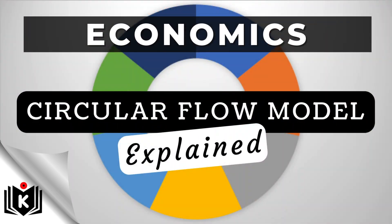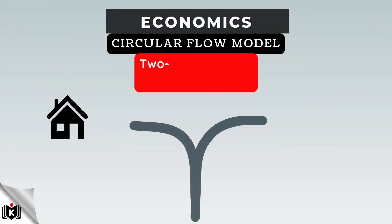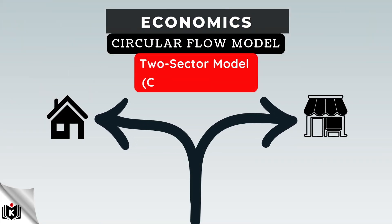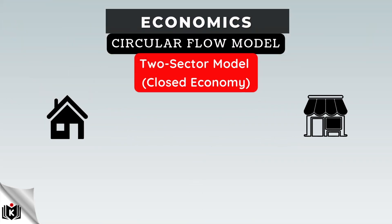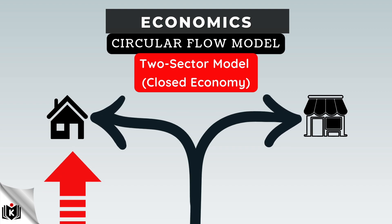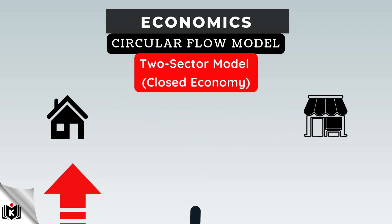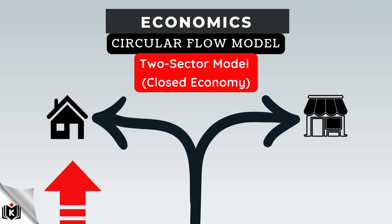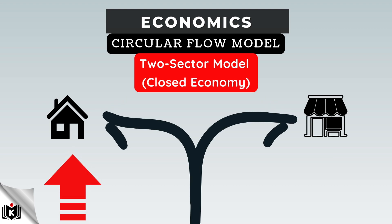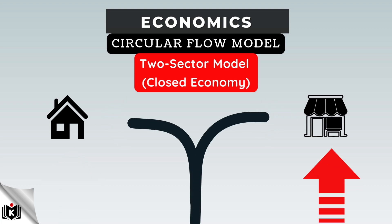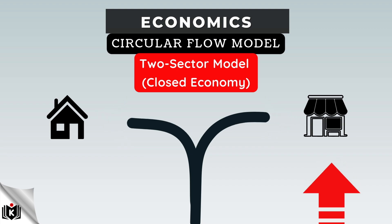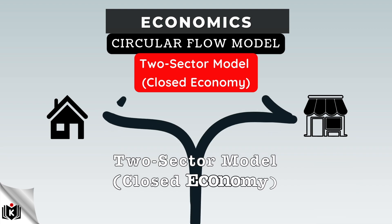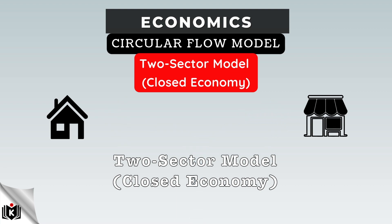Let's start with the basics. Imagine an economy with only two participants: households, who own the factors of production such as labor, capital, entrepreneurship, and natural resources; as well as businesses, who supply goods and services to such households. This is called a two-sector model and is considered a closed economy.